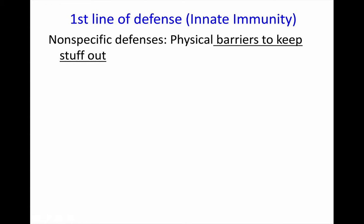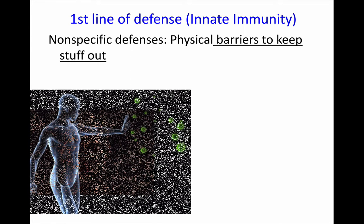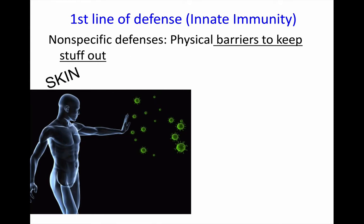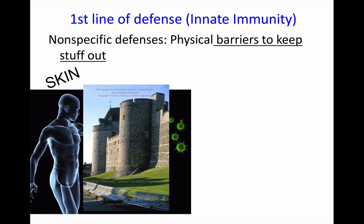Once bacteria and viruses get to your cells, that's when they can really do harm. The first line of defense is nonspecific — it protects you against anything and everything. These are physical barriers that keep bacteria and viruses out. Your number one first line of defense is your skin. Skin covers the outside of our body like a protective wall around a castle, preventing bacteria and viruses from getting in. Even the smallest virus can't get through the multiple layers of our skin, as long as your skin is nice and healthy.